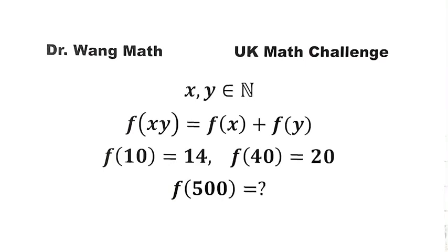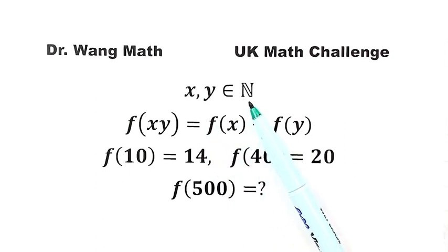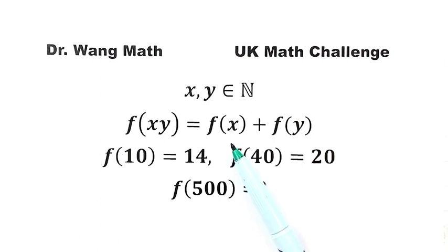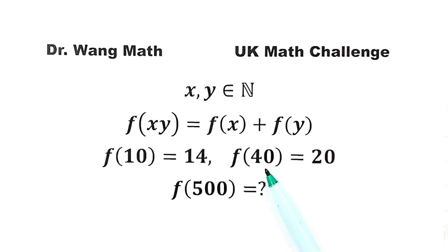In this video, we will solve a question from the UK Math Challenge. Here, x and y are positive integers. Given f of x times y equals f of x plus f of y, f of 10 equals 14, and f of 40 equals 20. Then what is the function value at 500?